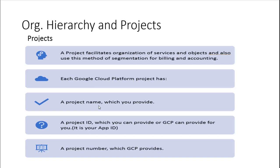Each GCP project has a project name, a project ID, and a project number. The project ID — also known as the app ID — is where you'll focus most of your time, ensuring that the right permissions are tied to the project ID and the users associated with that project. We'll discuss this more when we create a service account.